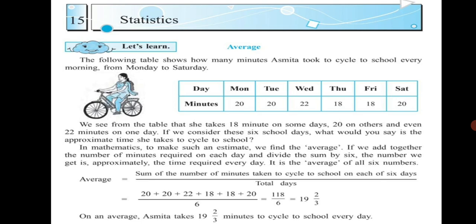Average is equal to sum of the number of minutes taken to cycle to school on each of 6 days divided by total days. So you add up 20 plus 20 plus 22 plus 18 plus 18 plus 20 divided by 6, which equals 118 upon 6, equals 19 2/3. On average, Asmita takes 19 2/3 minutes to cycle to school every day.